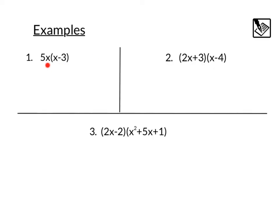Example 1. We've got 5x times x minus 3. This should look like a normal distribution problem like we've done in the past. 5x times x is 5x squared. 5x times a negative 3 or a minus 3 would be minus 15x. So we've written that product as a sum that is equivalent. Let's look at example 2.